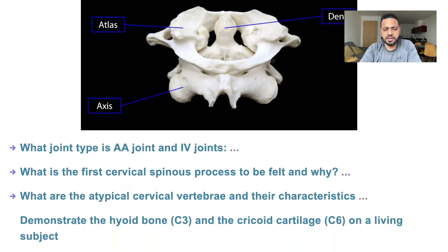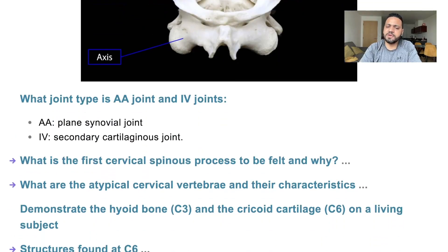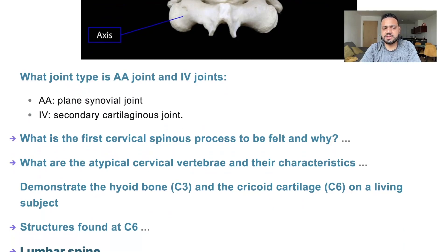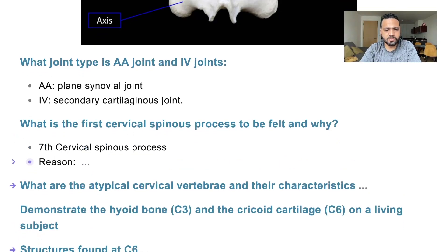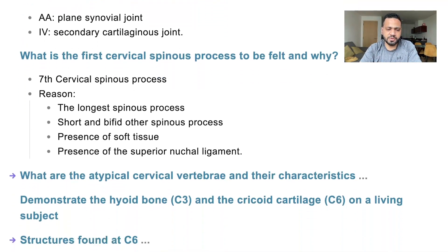The types of atlanto-axial joint: it's a plain synovial joint. The intervertebral joint is a secondary cartilaginous joint. The first cervical spinous process to be felt is C7, because it's the longest one — due to the presence of soft tissue, the nuchal ligament, and the fact that the other spinous processes in the cervical area are short and bifid.